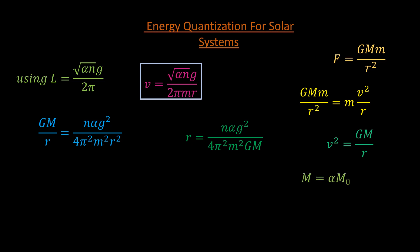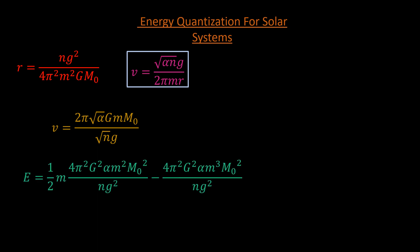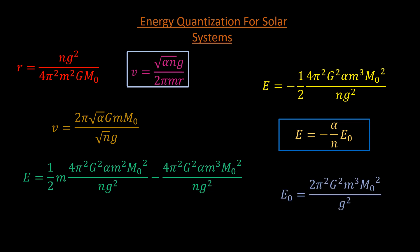Recall that the mass of the star, capital M, is given as alpha times m0. Putting these in the green equation produces the following red expression. Everything is a constant except for n, which is the orbital quantum number. So we can write r equal to n r0, where r0 is given by this expression. Subbing that into the velocity equation yields the following brown equation. Going a little faster, the energy equation becomes this. You can pause to verify. Simplifying yields this. So we can write the energy equation as minus alpha over n times E0, E0 being equal to this. This shows that energy is quantized in solar systems in exactly the same way it is quantized in atoms.